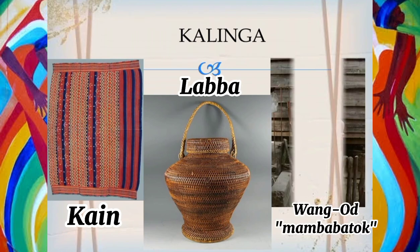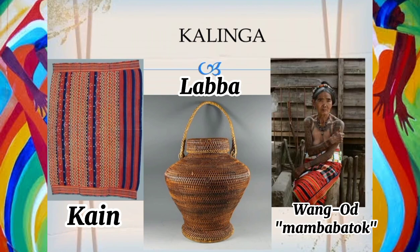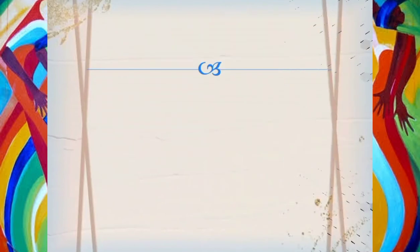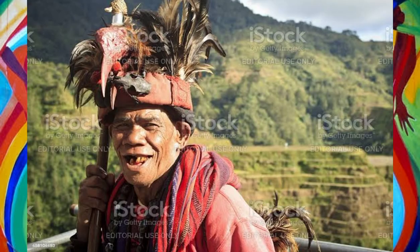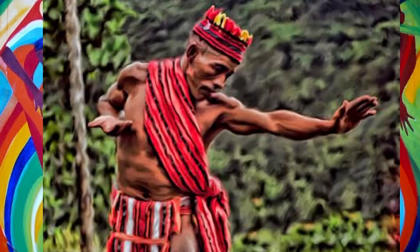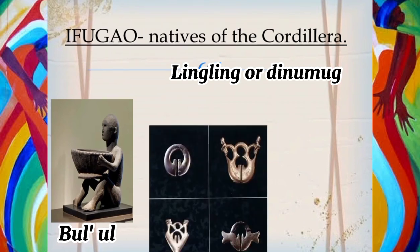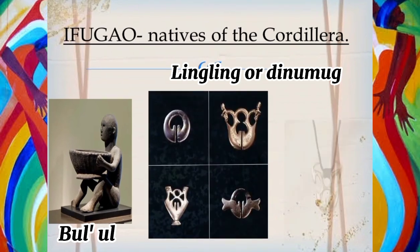In tattooing, Wang-od is the last mambabatok, or traditional Kalinga tattoo artist. For the Ifugao, natives of the Cordillera, they are also known in sculpture. One of the examples is the Bulol — a wooden sculpture that represents the rice granary spirits. It is used in rituals performed to call the ancestors to protect the rice fields from pestilence and to ask for an abundant harvest. The second example is the Lingling-o — amulets of the Igorot. These are made from jade, gold, copper, bronze, stone, and other materials.